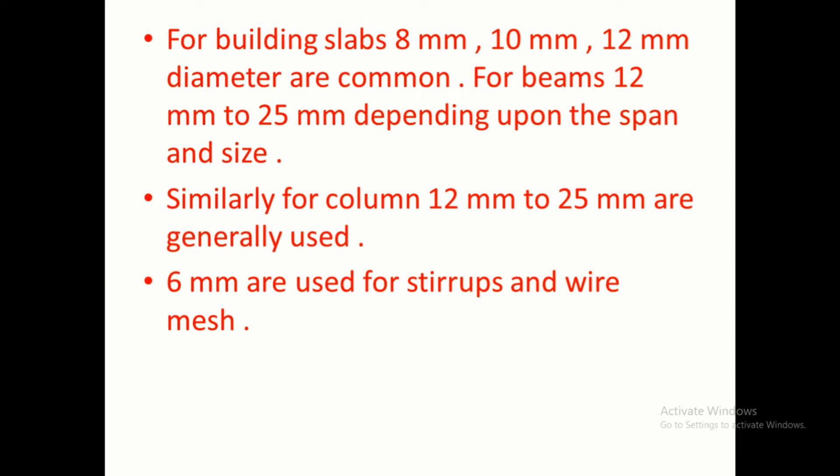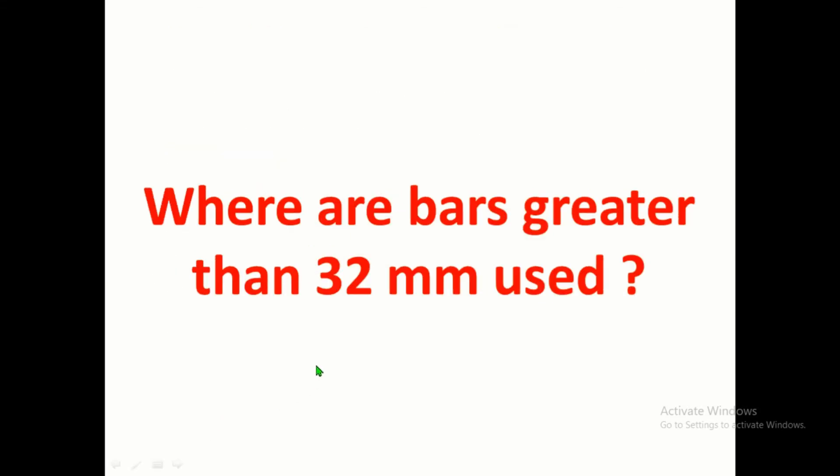For building slabs, 8 mm, 10 mm, 12 mm diameters are common. For beams, 12 to 25 mm bars depending upon the span and size. Similarly for columns, 12 to 25 mm are generally used. 6 mm are generally used for stirrups and wire mesh.